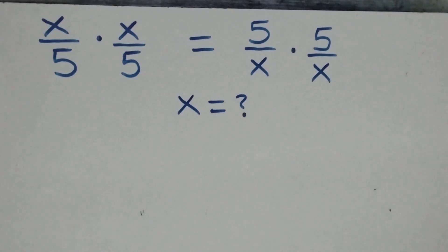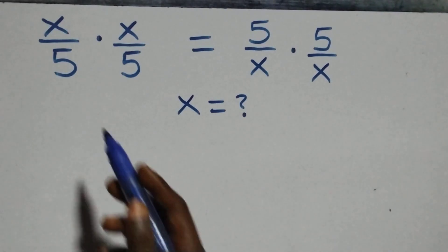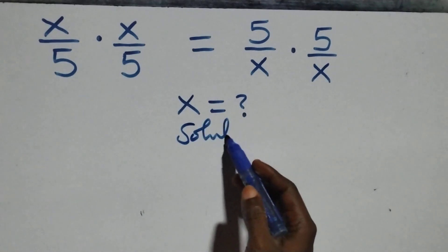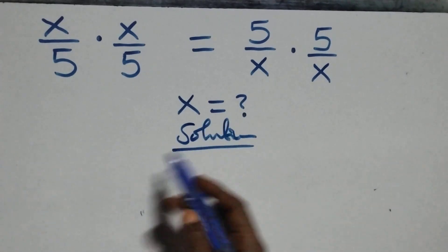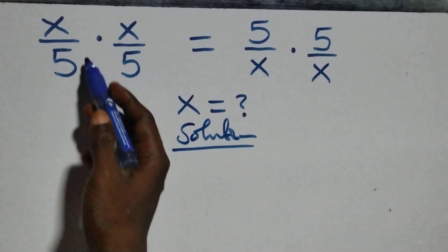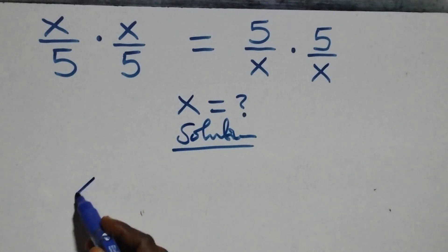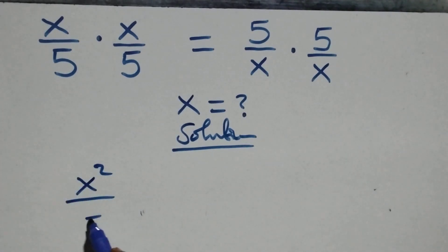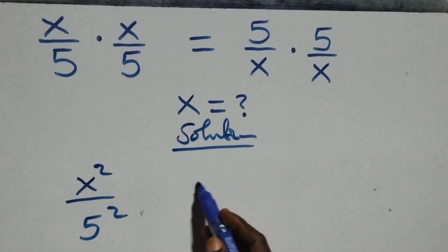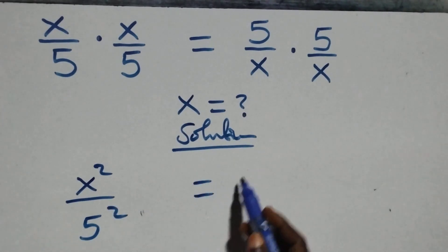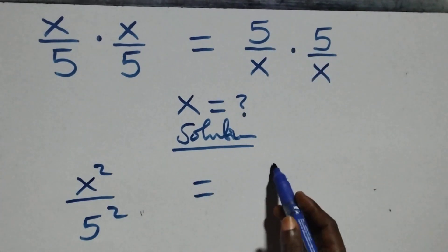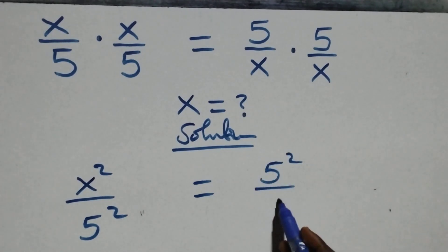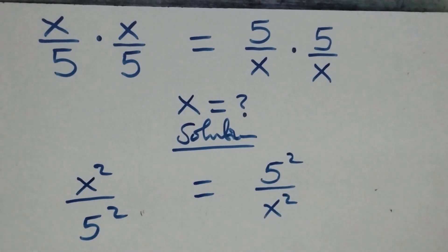Hello, you are welcome. How to solve this nice algebra equation. From what we have here, we can multiply directly: x times x gives x squared, and also 5 times 5 we have 5 squared, then equals 5 times 5 which is also 5 squared, then divide by x squared.